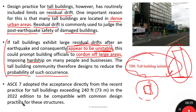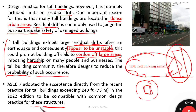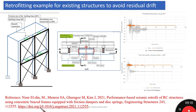ASCE 7 adopted the acceptance criteria directly from the recent practice of tall buildings exceeding 240 feet or 73 meters in the 2022 edition, to be compatible with common design practice for these structures. This makes it consistent with what the tall building initiatives have established.